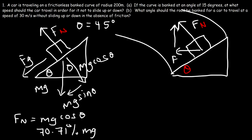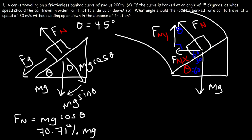We call the x-component of the normal force Fn_x and the y-component Fn_y. We also have the weight mg. The angle between the normal force and the vertical is equivalent to the banking angle theta. For example, if the bank angle is 60°, the surface makes 30° with vertical; since the normal force is perpendicular to the surface, the angle between Fn and the vertical must equal the bank angle theta.